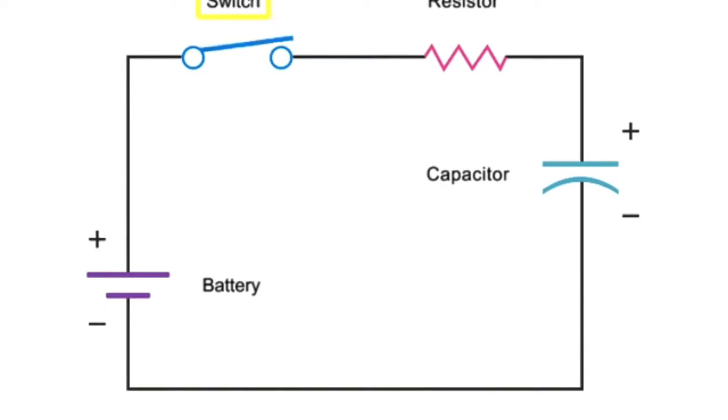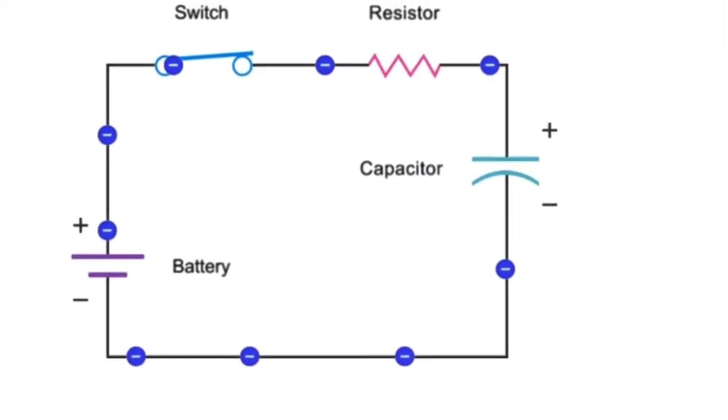When the switch is closed, electrons flow and charge builds up on the capacitor's plates. This causes the voltage across the capacitor to increase.